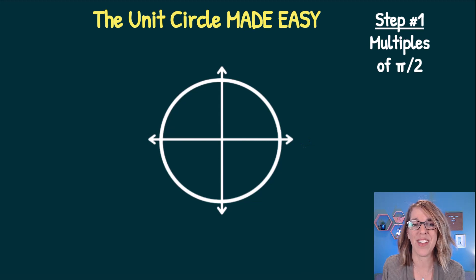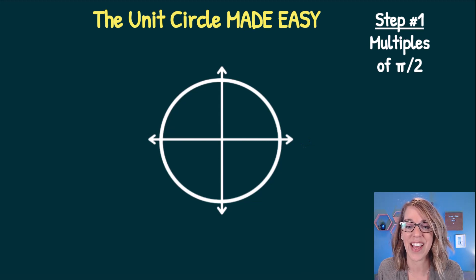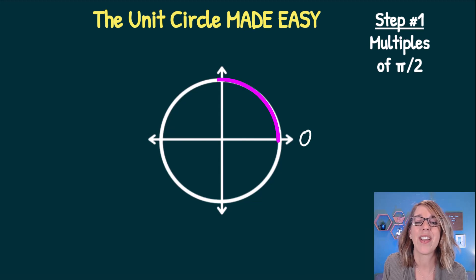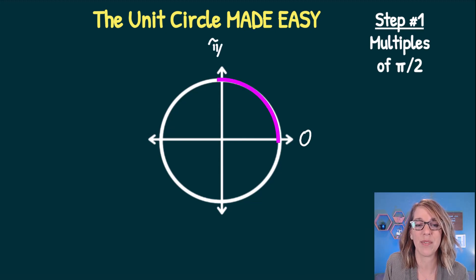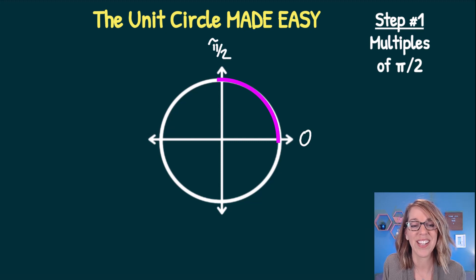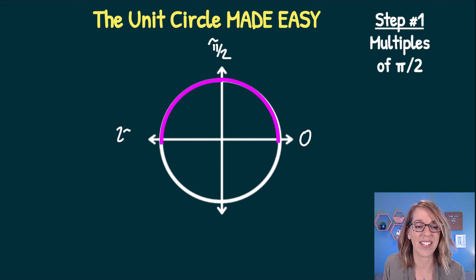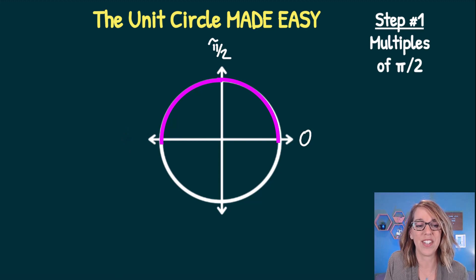Starting at the positive x-axis means I haven't traveled any angle at all, so I'm at 0 radians. Going up to the positive y-axis, I've traveled 90 degrees, which is equivalent to pi-halves. Traveling over to the negative x-axis, I'm at 2 pi-halves, which reduces to just pi.